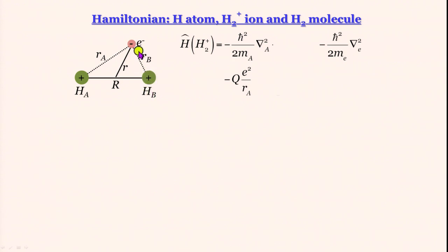This electron that is there, remember there is still one electron, we have not added the second electron yet. The electron in addition to its attraction by A is also attracted by B. That is one thing. This nucleus B is going to have its own kinetic energy.